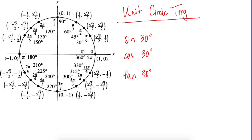We're going to start with Unit 1, which was unit circle trig. Over here on the left I have my unit circle. The unit circle helps us find trig functions — cosine is always x, sine is always y, and tangent is always y over x, or sine over cosine.